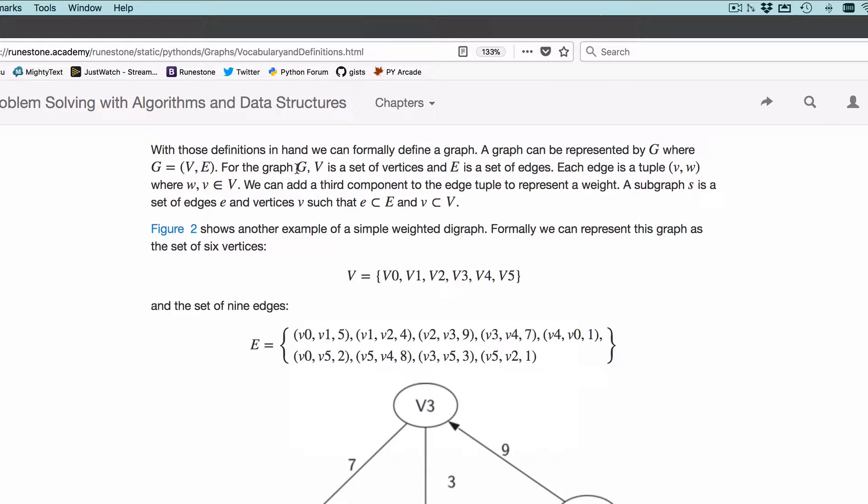For the graph G, V is the set of vertices and E is the set of edges. The word set means there's a unique set of vertices and a unique set of edges. That's why we can use a dictionary to represent each one later on.